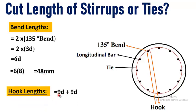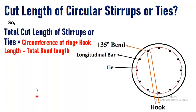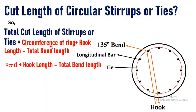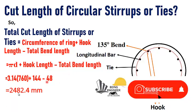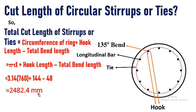The hook length for two hooks is 9d + 9d = 18d. With a bar diameter of 8 millimeters, the total hook length equals 18 × 8 = 144 millimeters. Putting values into the formula — circumference of ring plus hook length minus total bend length — we get: π × 720 (internal diameter of stirrup) + 144 − 48, which equals 3.14 × 720 + 144 − 48 = 2482.4 millimeters.